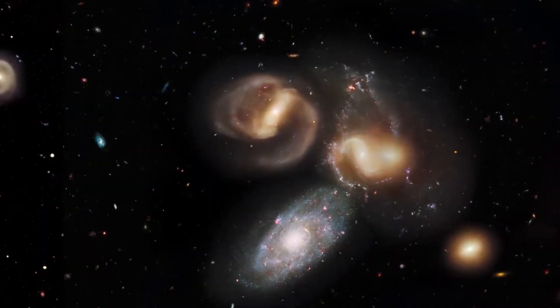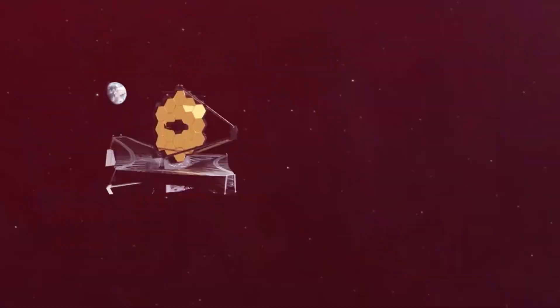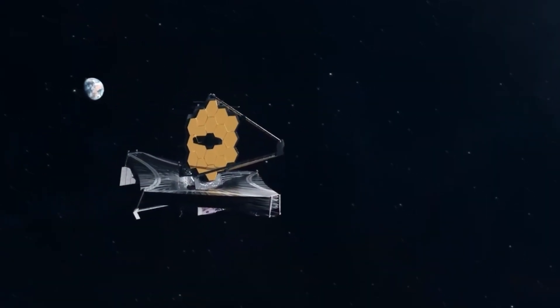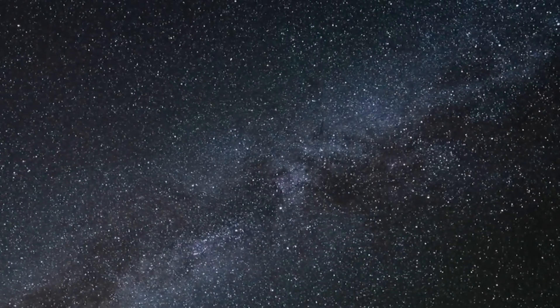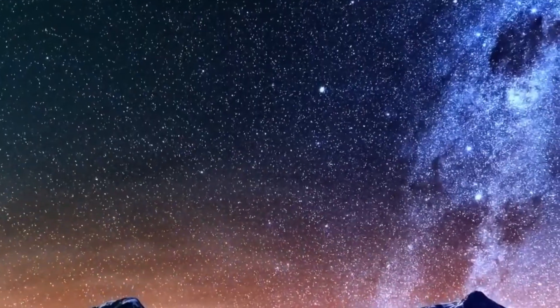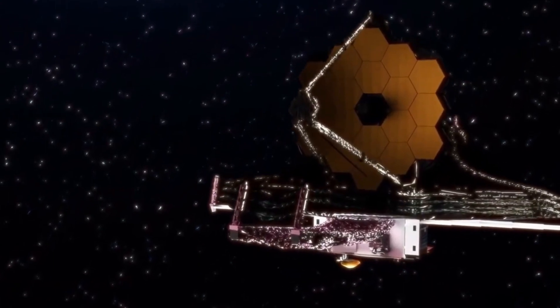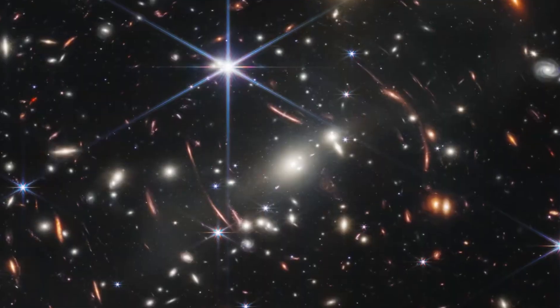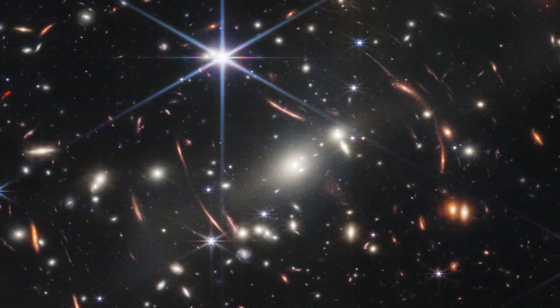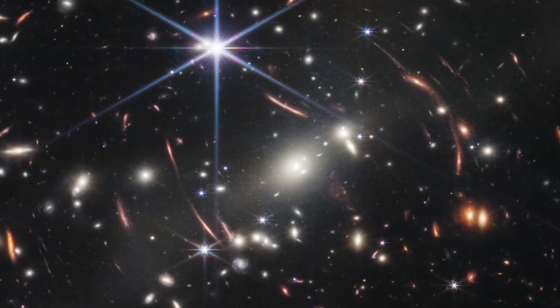These galaxy discoveries, based on Webb's very first data release, are so distant that even the world's most powerful telescope can only see them as tiny reddish dots. Nevertheless, the low light is enough to draw important information from the color spectrum. This allows us to find out about the age, size, and density of the galaxies.